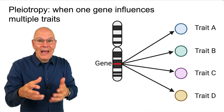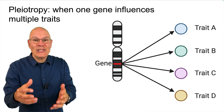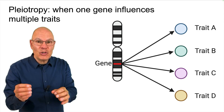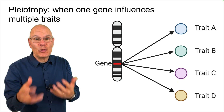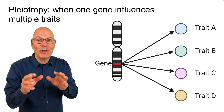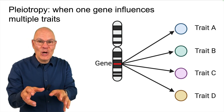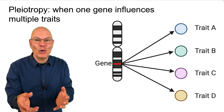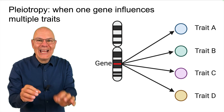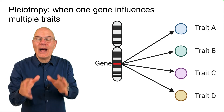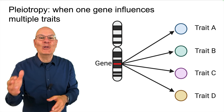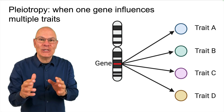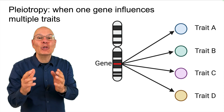The biology of sickle cell anemia and cystic fibrosis is super interesting, and these are illustrative examples that are good to know for the AP Bio exam and for your course. But the main takeaway is that pleiotropy is when one gene influences multiple traits.